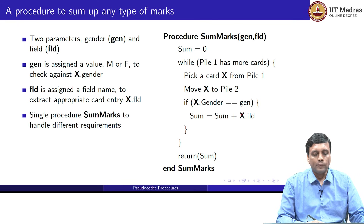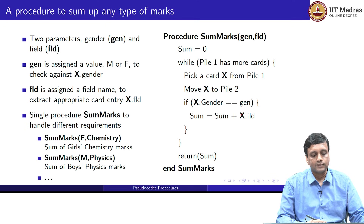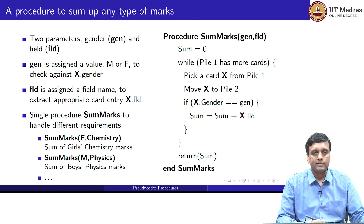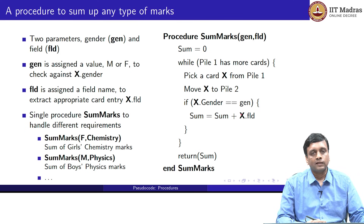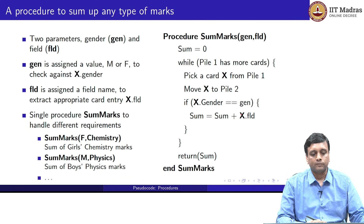By instantiating this to different values, we can get different results. If we call sum marks with the arguments F and chemistry, this adds up those for gender F in the field chemistry, giving us the girls' chemistry marks. If we say M and physics, we get the boys' physics marks. By varying the parameters, we can get any combination of gender and subject total.